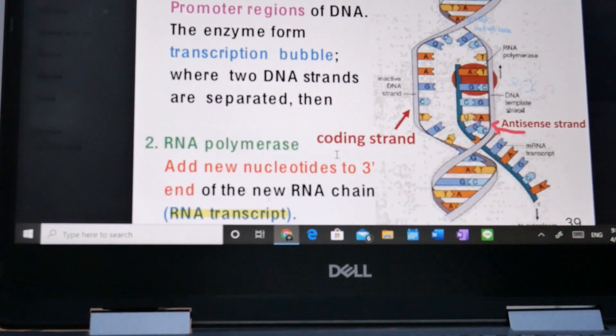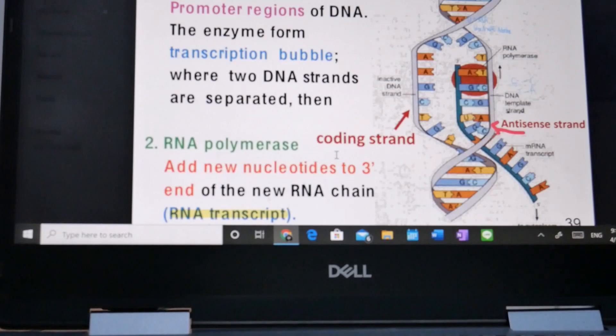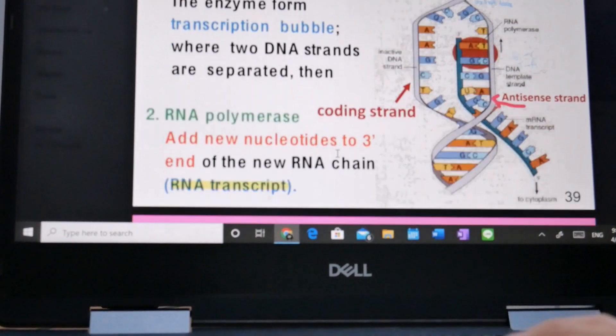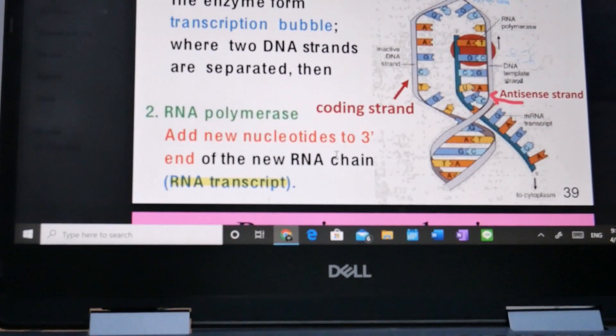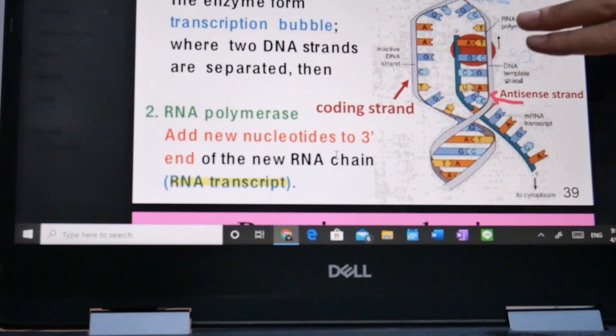The RNA polymerase enzyme will recognize and bind the promoter regions of DNA. The enzyme forms a transcription bubble where two DNA strands are separated, then RNA polymerase adds new nucleotides to the three prime end of the new RNA chain.